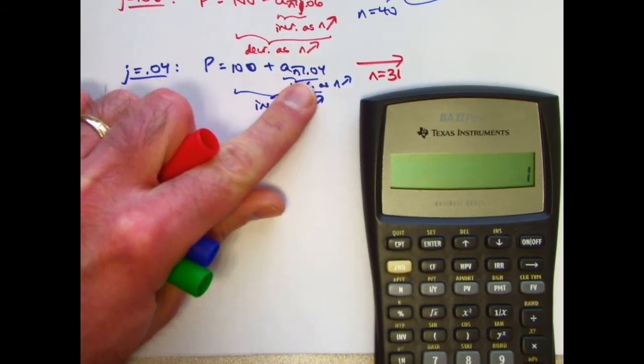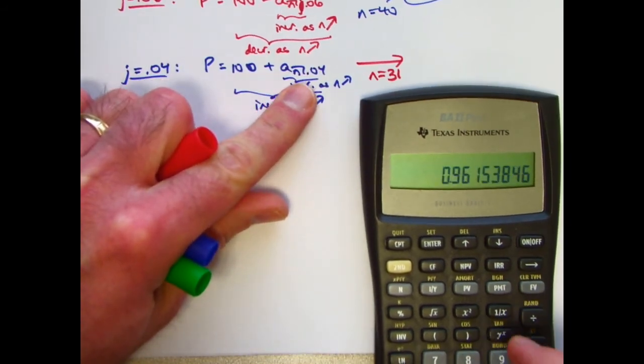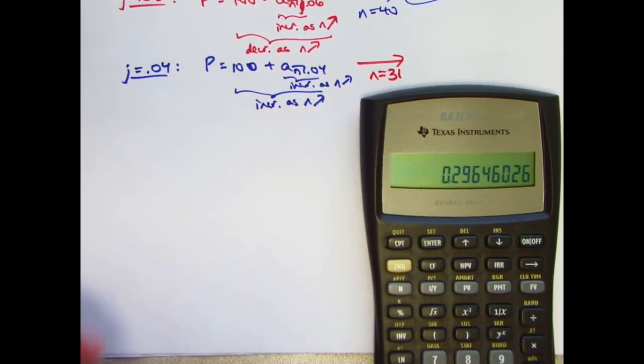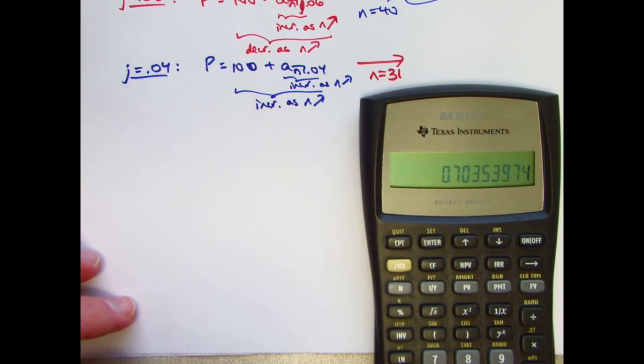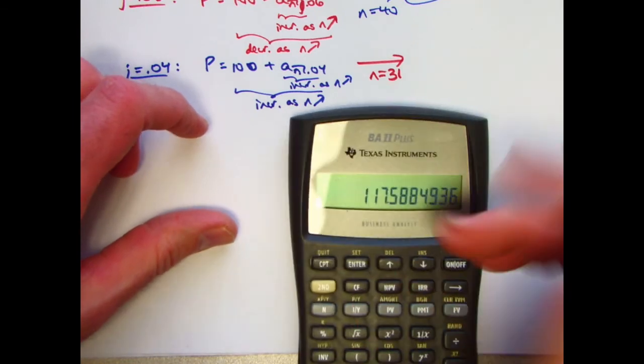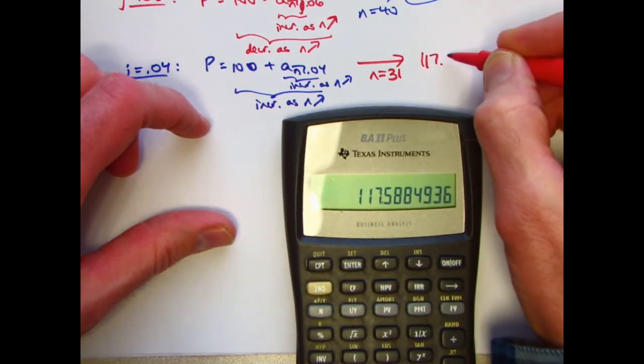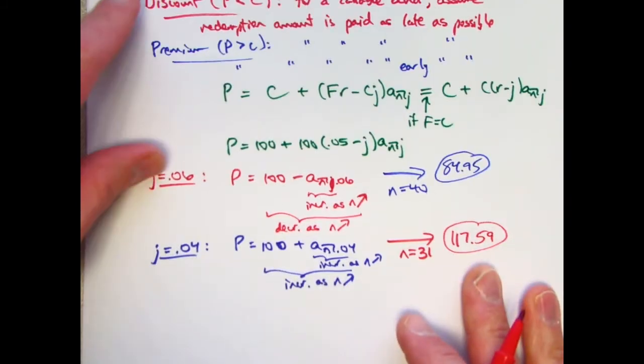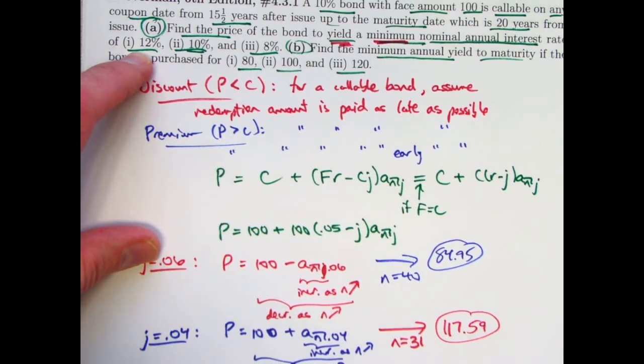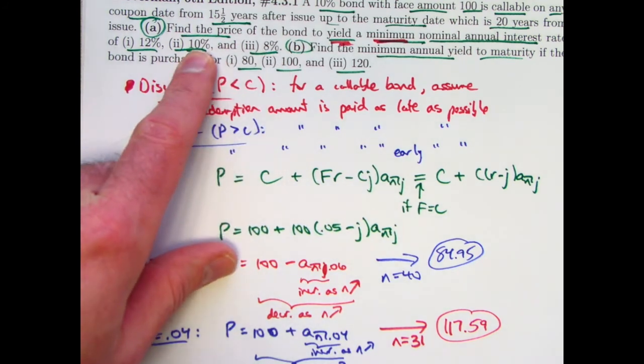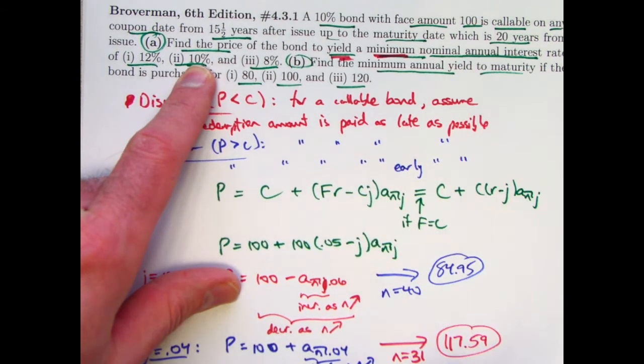1.04 reciprocal to the 31st power, subtract from 1, divide by 0.04, add 100 to that, the answer is 117.59. And that's correct. So this one's answer is 84.95. This one's answer is 117.59. And again, this one's answer is 100, the same as the redemption value.